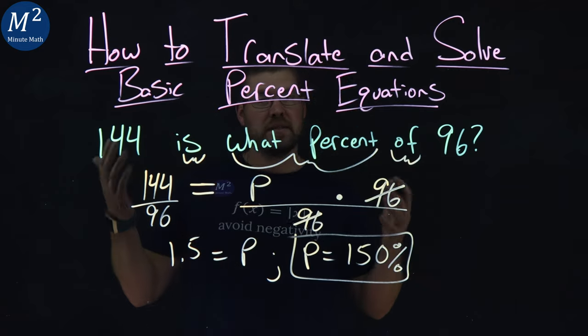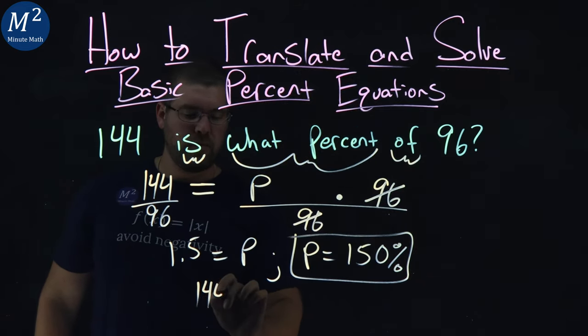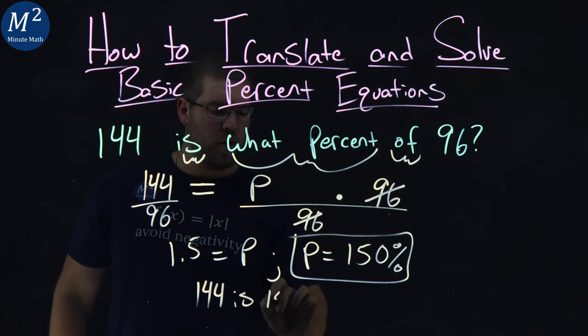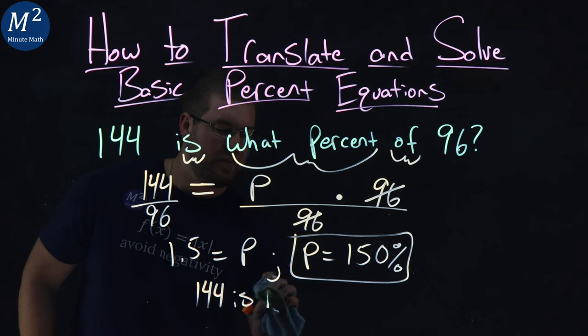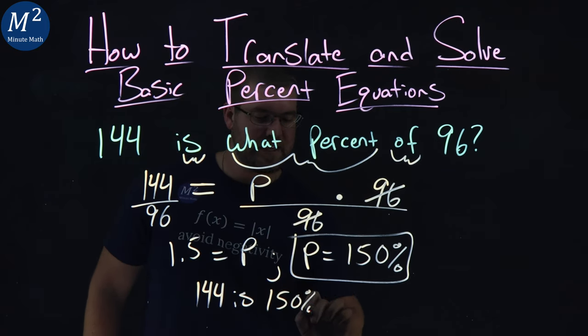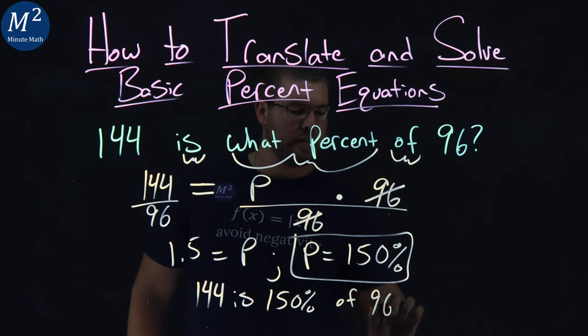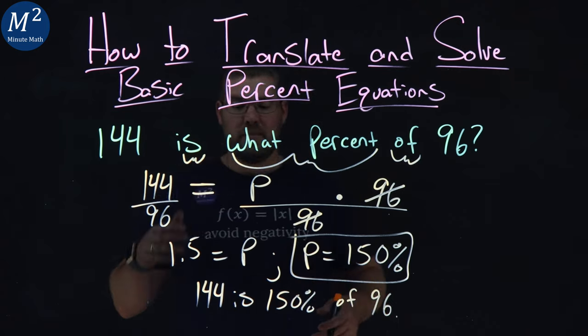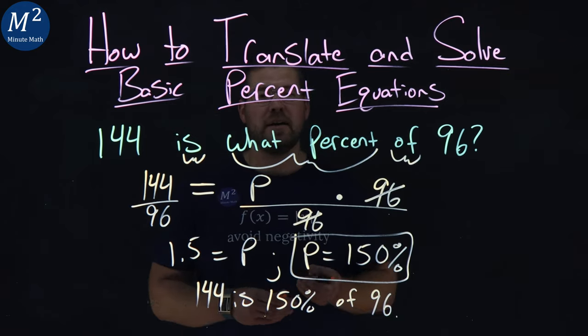So if you want to make a final statement about what is going on here, we can write this: 144 is 150% of 96. And there we have it. 144 is 150% of 96.